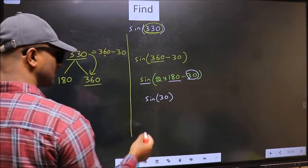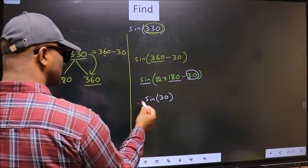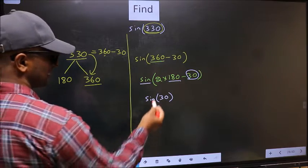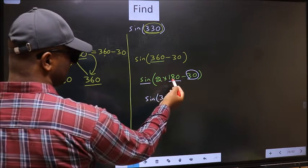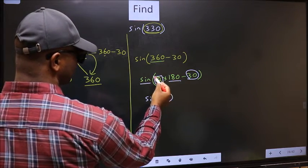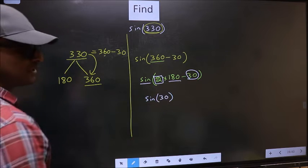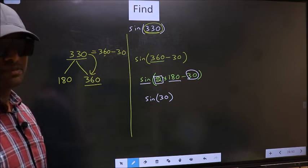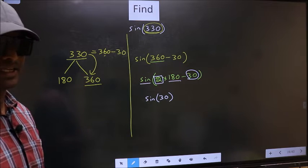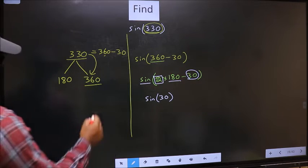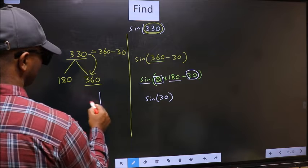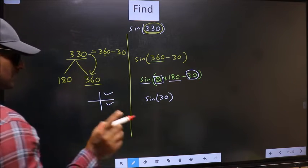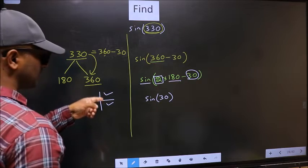Now the question is, will we get here plus or minus? To answer that, we should look at the number before 180. That is 2. And 2 is even. And all the even multiples of 180, they lie in either the first or the fourth quadrant. So now to select the quadrant,